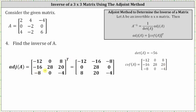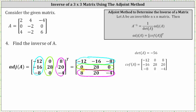To transpose the cofactor matrix, the first column of the cofactor matrix becomes the first row of the adjoint of A. The second column of the cofactor matrix becomes the second row of the adjoint of A. And the third column of the cofactor matrix becomes the third row of the adjoint matrix. Now that we have the adjoint of A and we already have the determinant, we can use the formula to find A inverse.